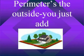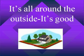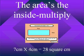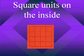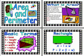Perimeter's the outside — you just add. It's all around the outside. The area's the inside — multiply. Square units on the inside.